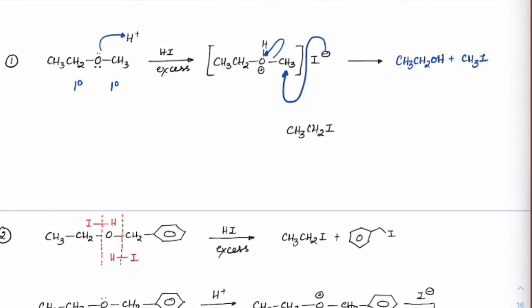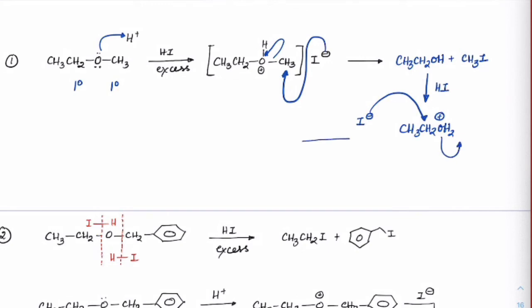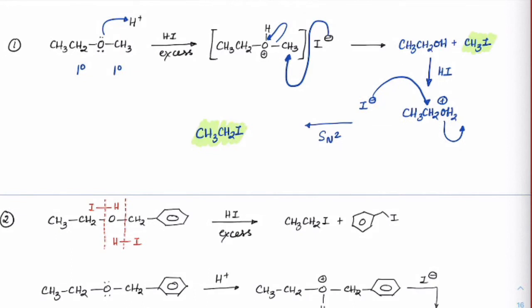Using the shortcut: break both bonds and give iodine on both sides; the center oxygen becomes water. For a diethyl ether type case where both sides are one degree, an oxonium ion forms and I⁻ attacks the least substituted carbon by SN2. We get CH₃CH₂OH plus CH₃I. Then the alcohol further reacts with excess HI: CH₃CH₂OH becomes CH₃CH₂OH₂⁺, I⁻ attacks by SN2, H₂O leaves, and CH₃CH₂I is formed. Final products: both sides as iodides.